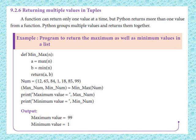Def is the definition of the function. Inside the function: A is equal to max(numbers), B is equal to min(numbers). Then return A and B values together.